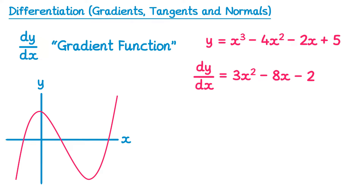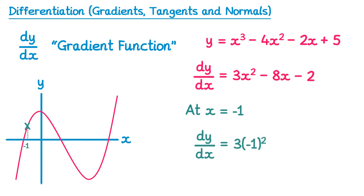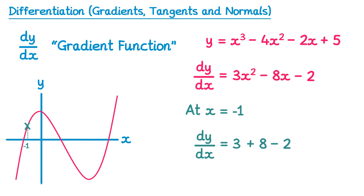This allows us to work out the gradient at any point on the curve. Let's look at the point where x equals negative 1. To find the gradient, we substitute negative 1 into the expression: dy by dx equals 3 lots of negative 1 squared, take away 8 lots of negative 1, take away 2. That gives 3 plus 8 minus 2, which equals 9. So the gradient of the curve and of the tangent at this point is 9.